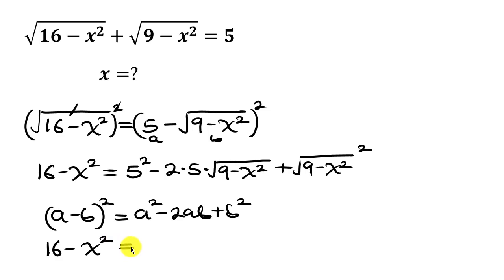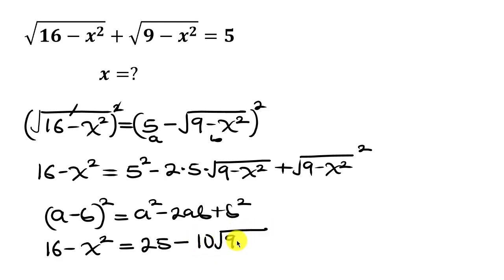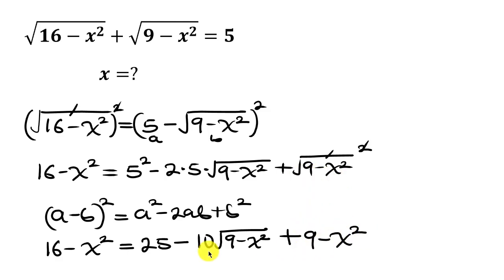Simplifying further, we have 16 minus x squared equal to 25 minus 10 times the square root of (9 minus x squared), plus 9 minus x squared — because the square cancels out the square root leaving behind 9 minus x squared.